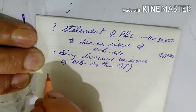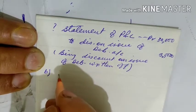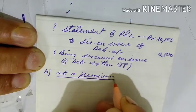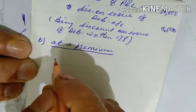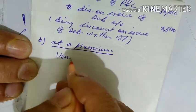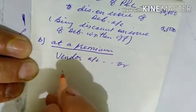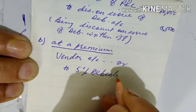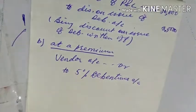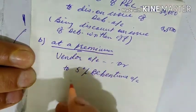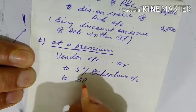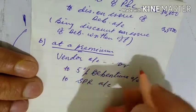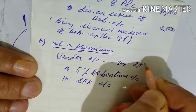Option B — debentures issued at a premium to the vendor: Vendor Account debit ₹2,70,000 to 5% Debentures Account and to Securities Premium Reserve (SPR) Account.